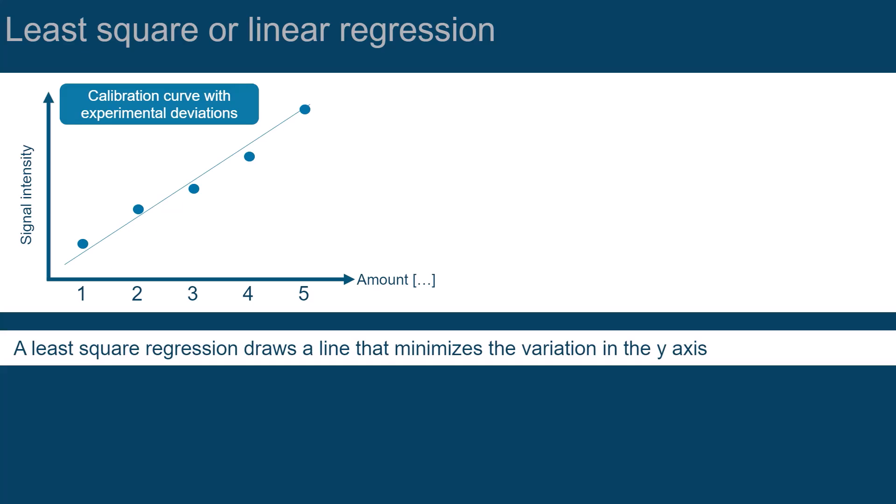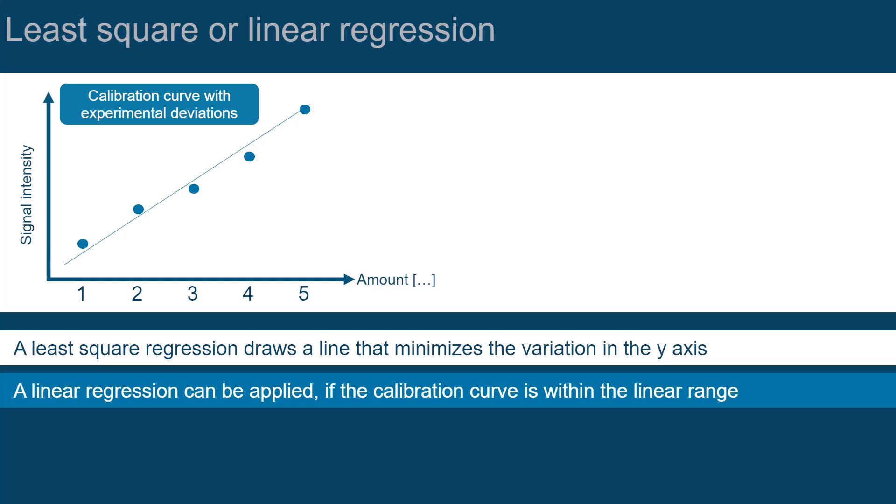Its purpose is to draw a line in a way that the variation in the y, or signal intensity axis, is minimized for all calibration levels. We can apply the subcategory of a least square regression, the linear regression, if the calibration curve is within the linear range.